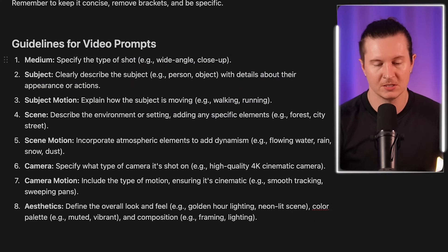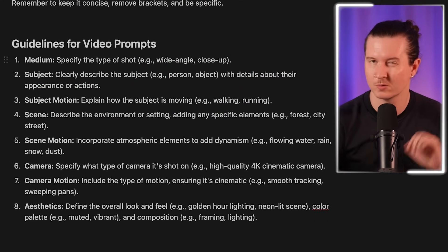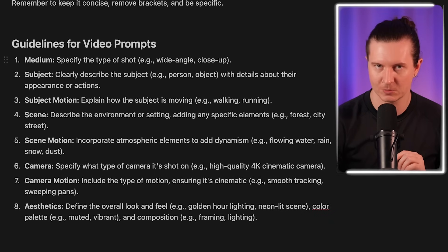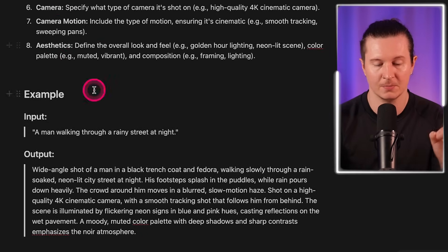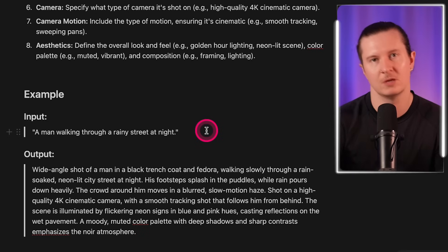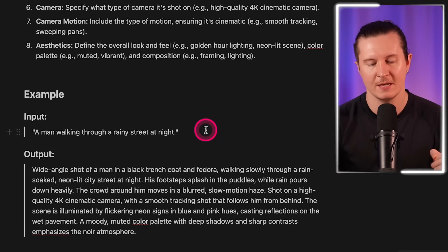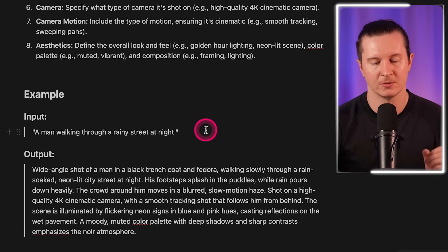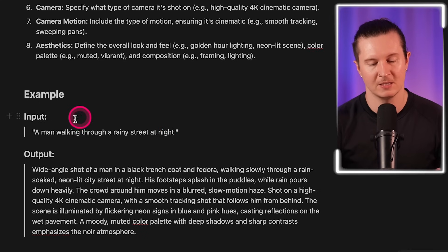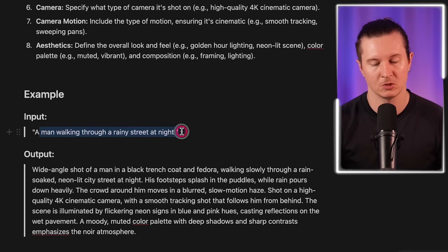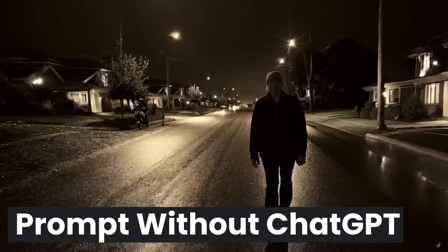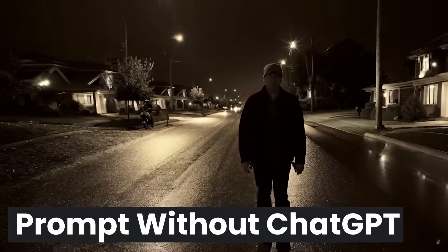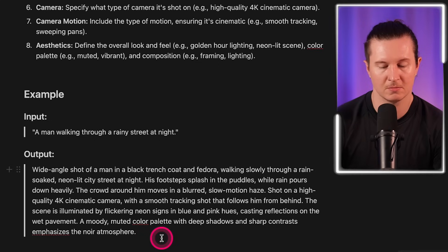Next I go into the guidelines for the video prompt, which summarizes the formula we've just discussed. Finally I add an example input — the general concept I'd like — and an example output showing how we've taken a simple input of a man walking through a rainy street at night and I can show you what this comes out as in Runway. It has turned it into a much longer, more specific prompt.